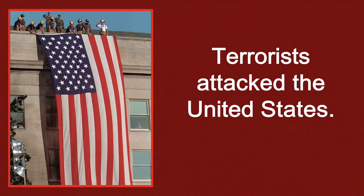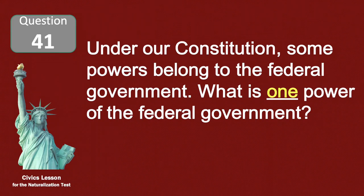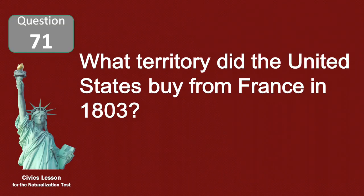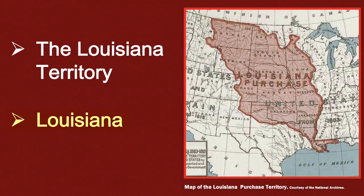Under our Constitution, some powers belong to the federal government — what is one power of the federal government? To print money. What territory did the United States buy from France in 1803? Louisiana.